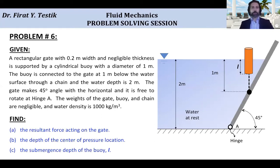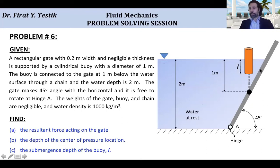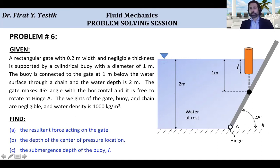All right, you should now see my screen. Here, in this problem, we have a rectangular gate, as you can see in the schematic. This gate is 20 centimeters wide or 0.2 meters wide, and the width is into the screen, and the thickness of the gate in this direction is negligible. This gate is supported by a cylindrical buoy, shown here. The diameter of the buoy is one meter, and the buoy is connected to the gate through a chain at one meter below the water surface. The water depth for this problem is two meters, water is at rest, and at the given instant, the gate makes an angle of 45 degrees with the horizontal.